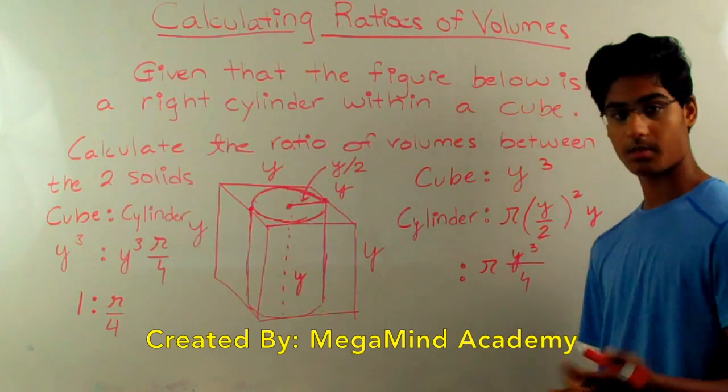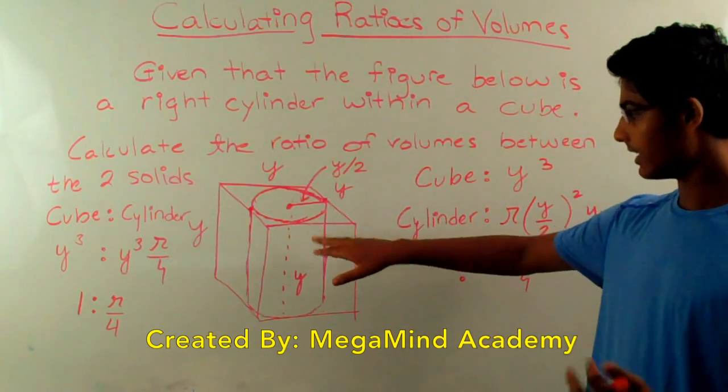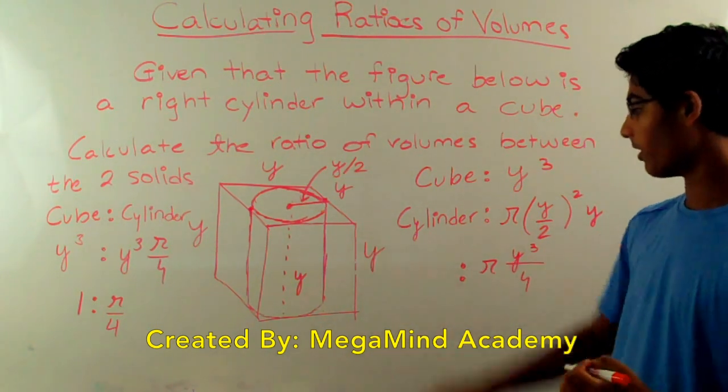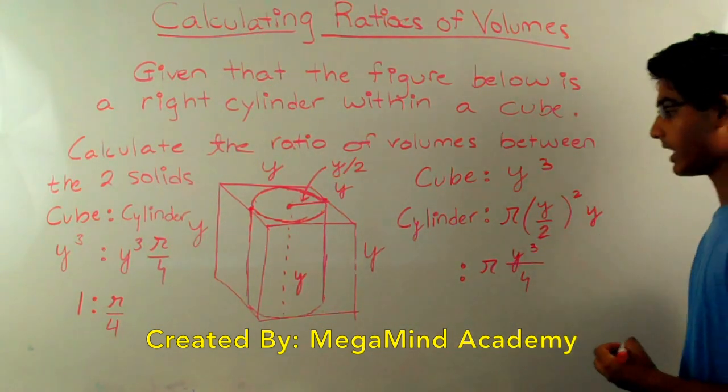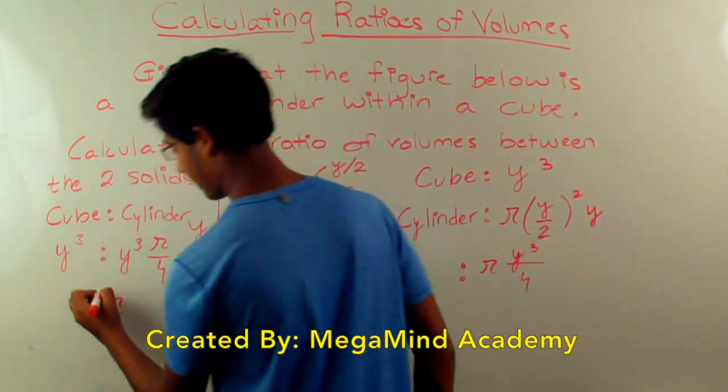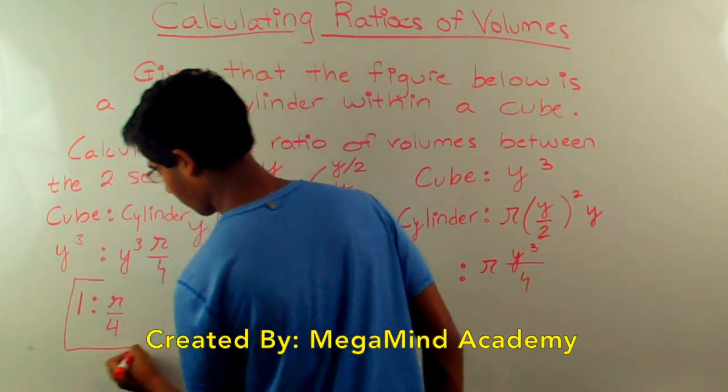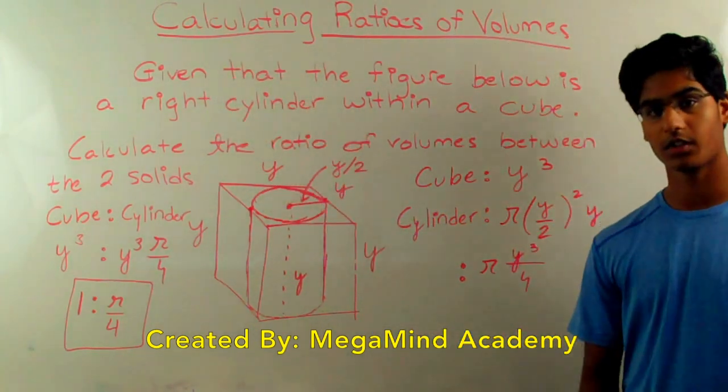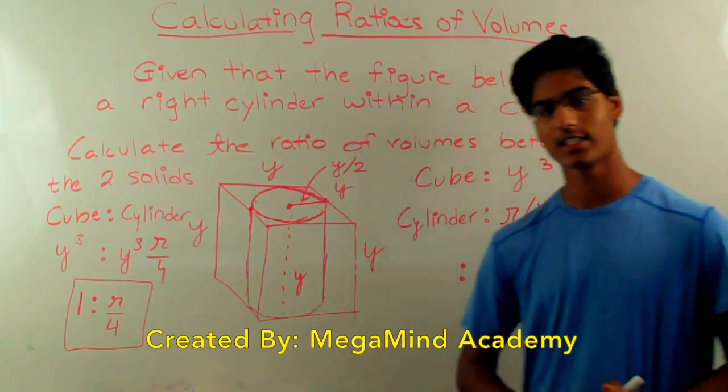So that means that the answer is 1 to pi over 4. And that also means that the volume of the cylinder is pi over 4 times the volume of the cube. So the answer to this problem, once again, is 1 to pi over 4. Today we learned about calculating ratios of volumes. Thank you for watching this video.